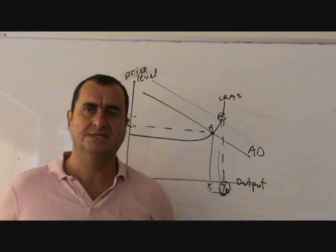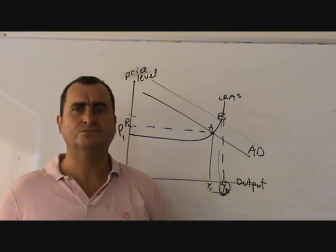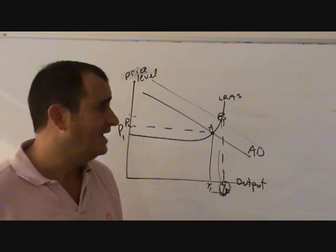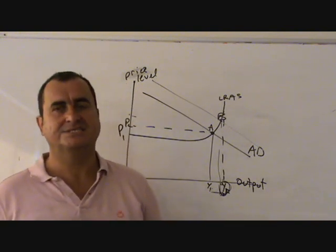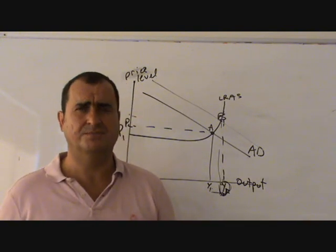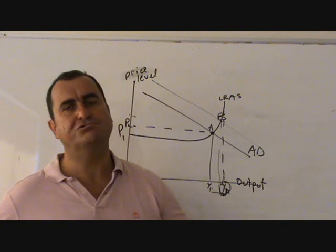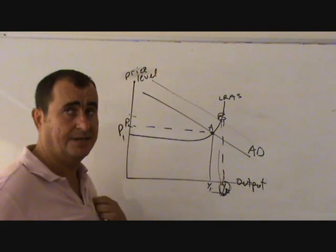Or it could cut tax. By cutting taxes like income tax, consumers would have more money left over in their pockets, disposable income would rise, and therefore they could go out and spend some of that disposable income and C, another component, the major component of aggregate demand would rise. So by cutting tax or raising government spending, they could achieve that outward shift in aggregate demand.